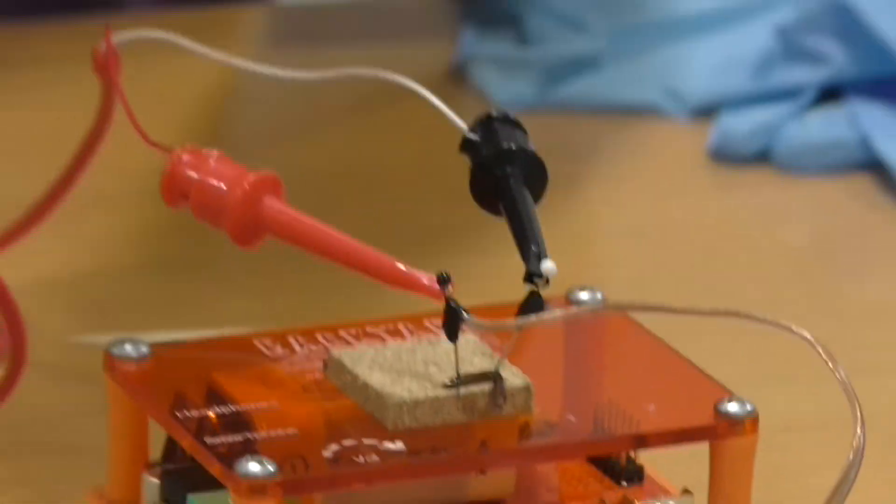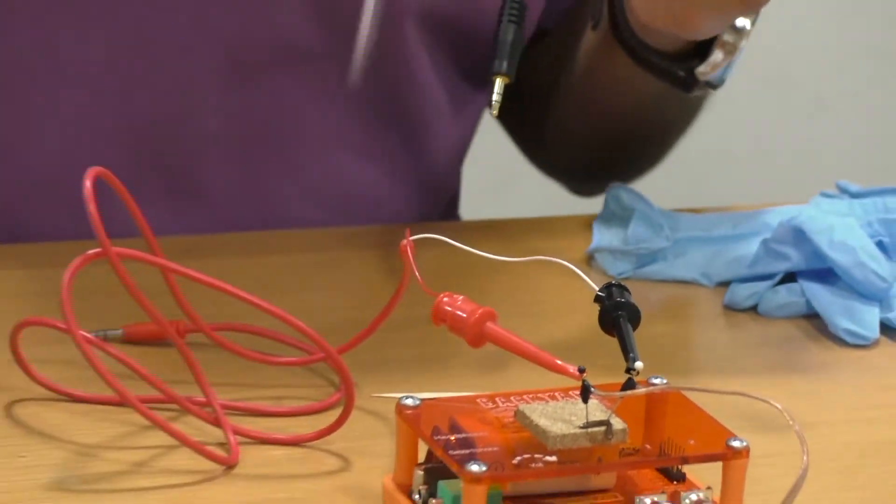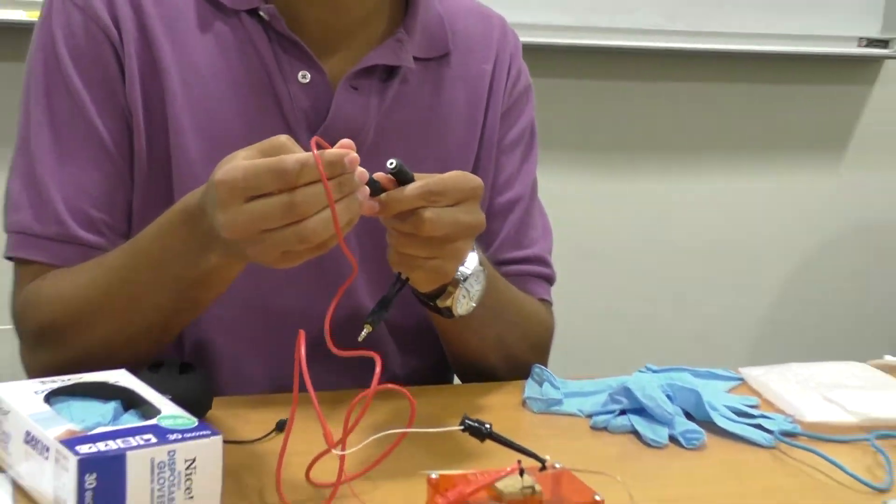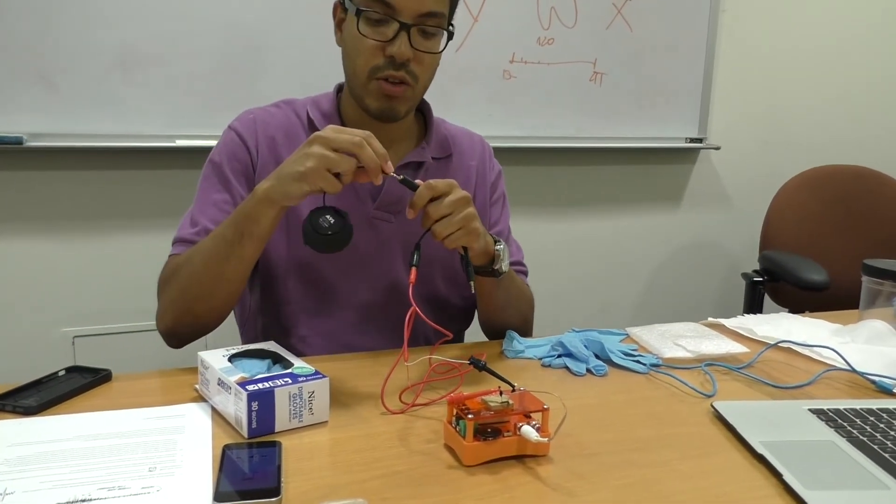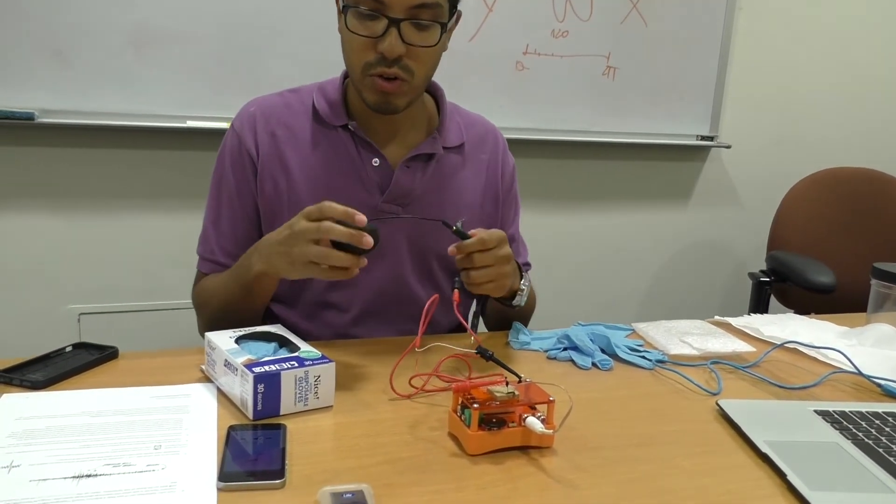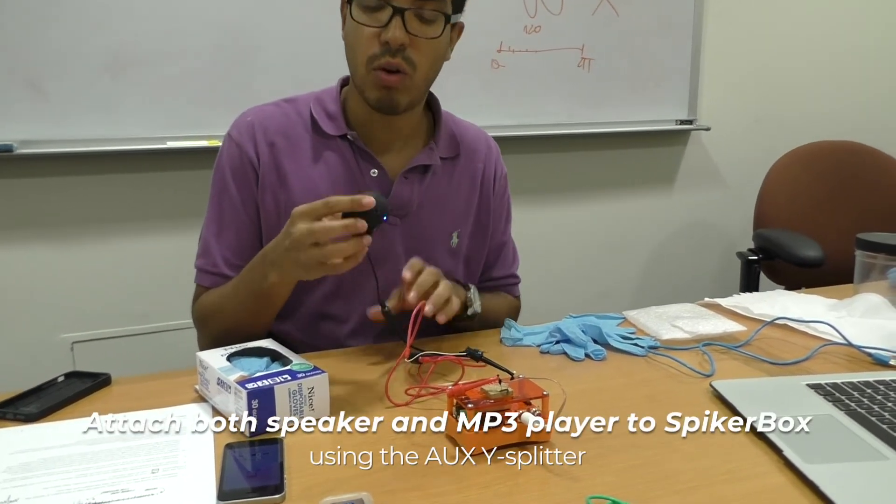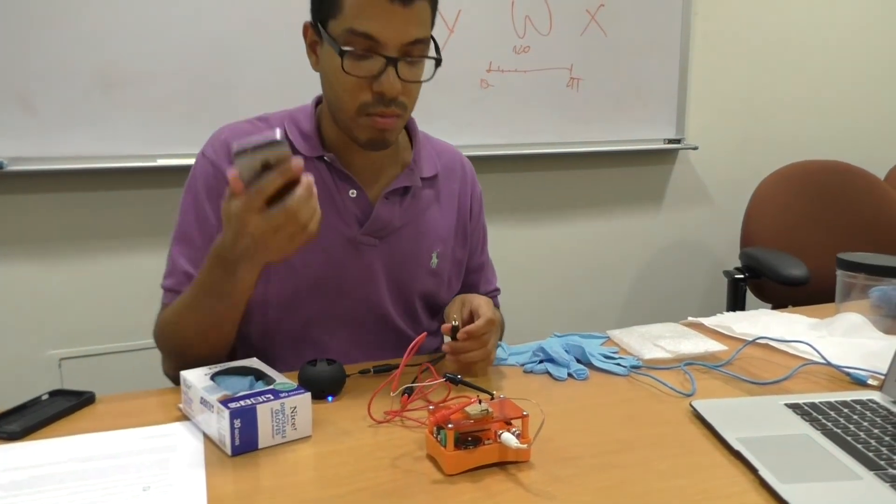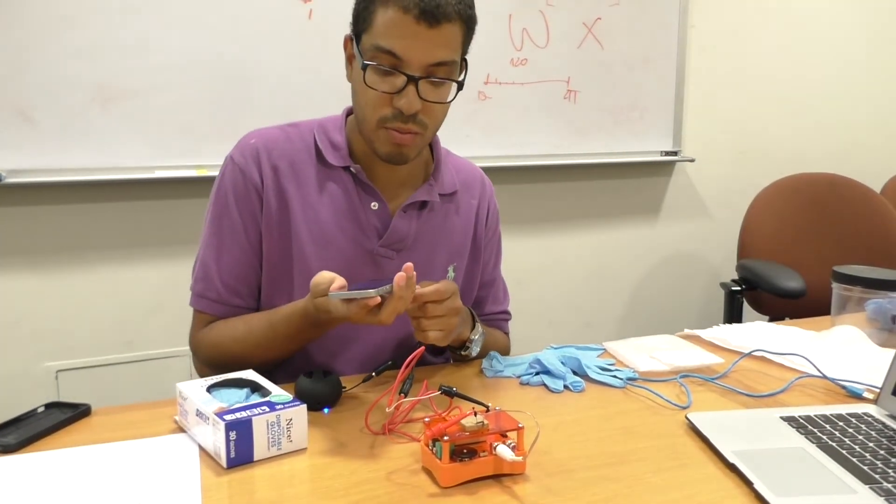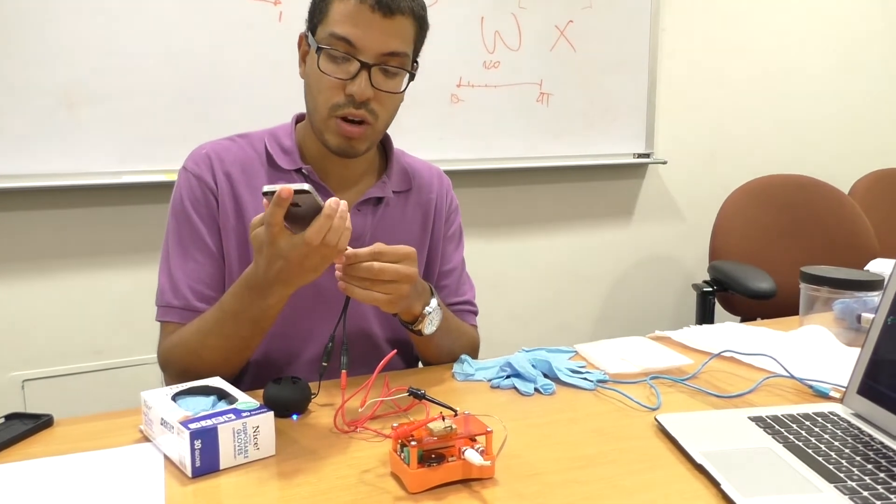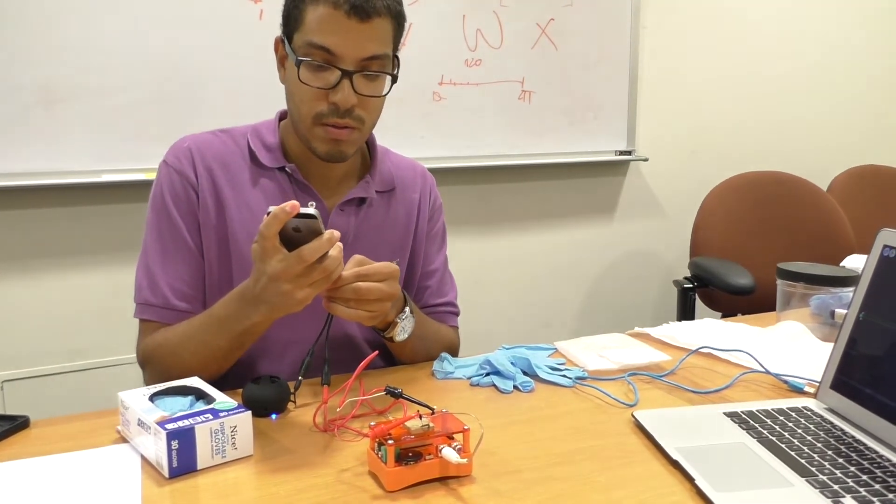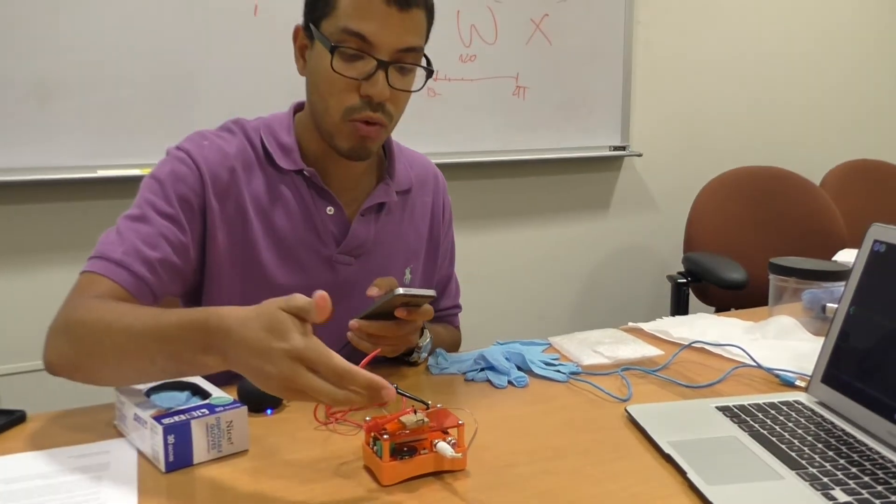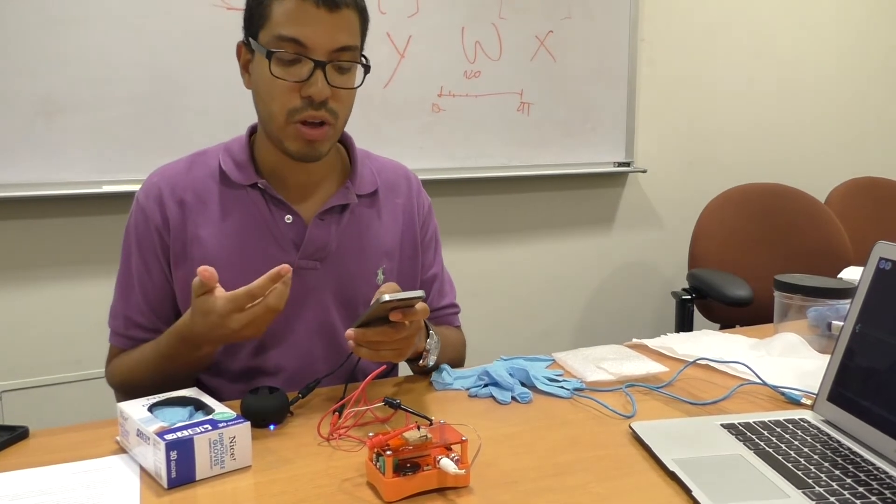And you can actually turn off your SpykerBox at this point. And then using the splitter that we've provided as well as your speaker, you'll plug the red stimulation cable into one half of the splitter and the speaker into the other half. Remember to turn your speaker on. We do this so we can hear the audio that we're playing from our device. So using a mobile device, a cell phone or whatever music player you have, you'll plug that into the third end of the splitter. And then starting at a low volume, because we don't want to over stimulate the leg at first, you'll start playing a song.